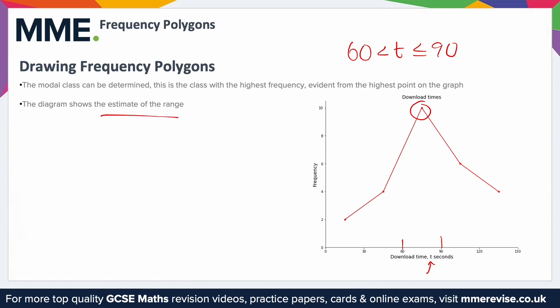An estimate of the range. Now it is purely an estimate, because remember, we're talking about classes here, and we don't know where values within the classes lie. They could be at the top of the class, they could be in the middle of the class, they could be at the start of the class. We don't know.